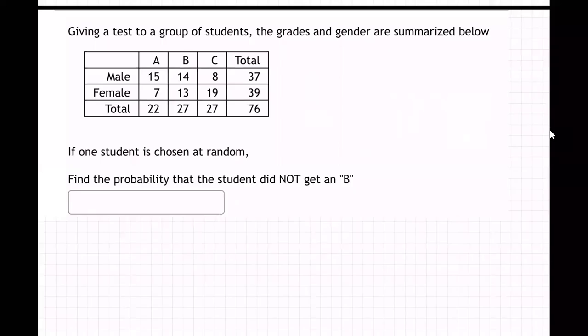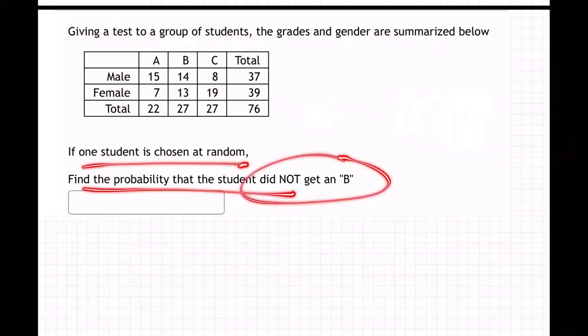Okay, so on this question we have the table about a group of students and how they did on the test. One student has chosen at random, what's the chance that it was somebody who did not get a B? So make sure the table is good for you.